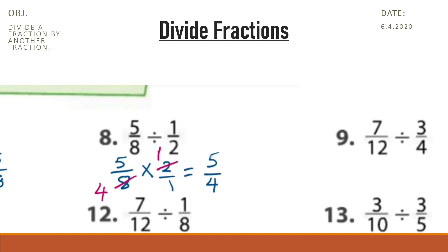Now, 5 fourths — the numerator is greater than the denominator. So we will write this as a mixed number. 5 divided by 4 is 1 because 1 multiplied by 4 is 4. The remainder from 5 is 1. So, it's 1 and 1 fourth.